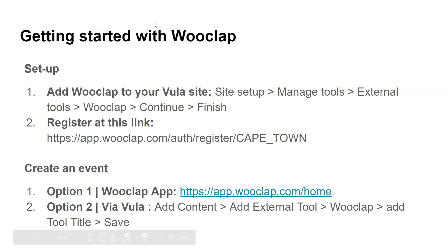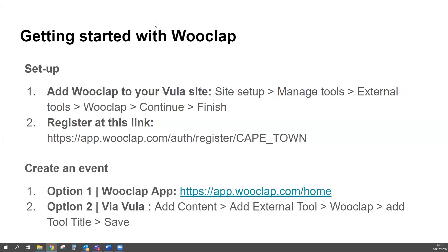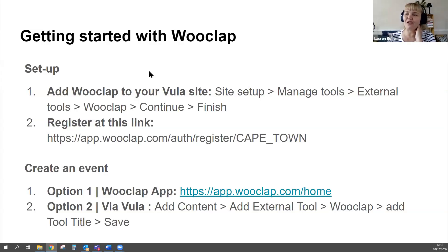To get started with WooClap, you need to set it up in your Vula site and create an event. To set up WooClap in Vula: go to site setup, manage tools, external tools, add WooClap, and click continue and finish. Then register using the specific UCT link — you can register without it, but it's much easier for consolidation to use the UCT-specific link. I'll pop it into the chat.